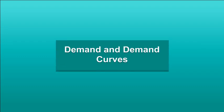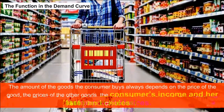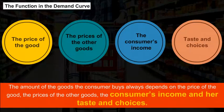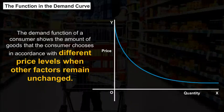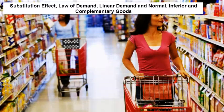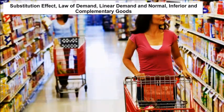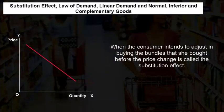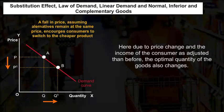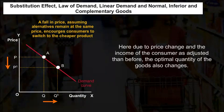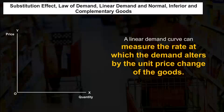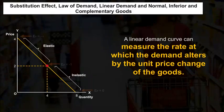Demand and demand curves: The amount of goods a consumer buys depends on the price of the good, the prices of other goods, the consumer's income, and her tastes and choices. The demand function shows the amount of goods a consumer chooses at different price levels when other factors remain unchanged. The substitution effect is when the consumer adjusts buying the bundles she bought before the price change. Due to price changes, as income is adjusted, the optimal quantity of goods also changes. The law of demand states that consumer demand is always inversely related to the price of the good.